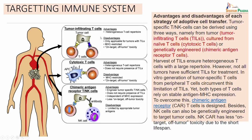Now, when you are targeting the immune system, one could use the tumor infiltrating T cells or one could use the CARs, that is the chimeric antigen receptor. The CAR is actually a separate topic which needs to be covered in detail, but I am just giving a bird's eye view of what is being done here. What are the advantages and disadvantages of each strategy of this adoptive cell transfer? The tumor specific T or the NK cells can be derived.